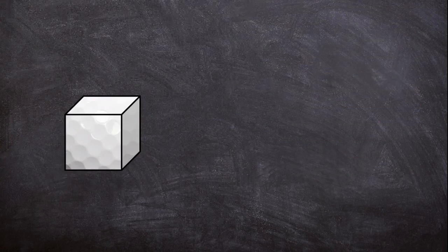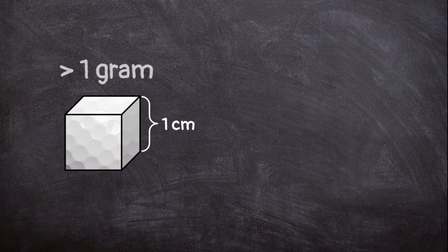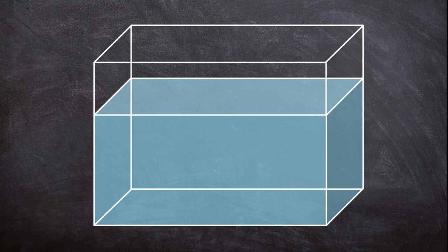Imagine cutting a cube out of the golf ball with sides measuring 1 centimeter. This cube of golf ball would have a mass greater than 1 gram. The golf ball is more dense than water and will sink.